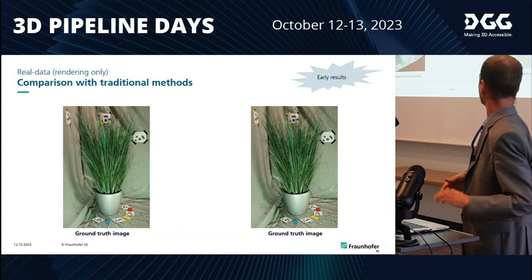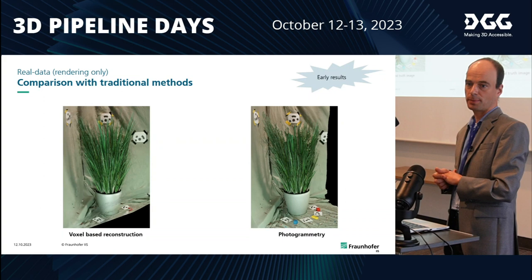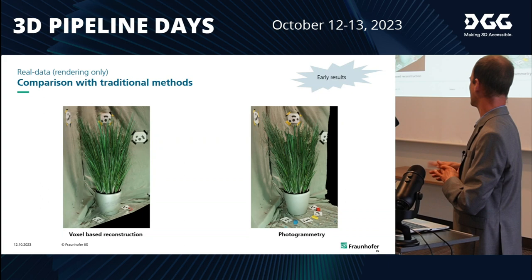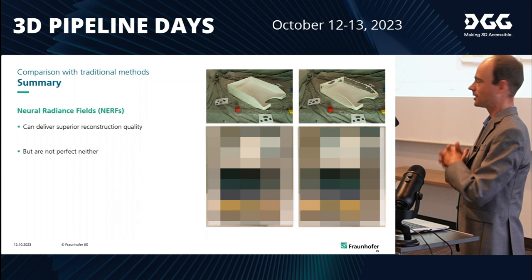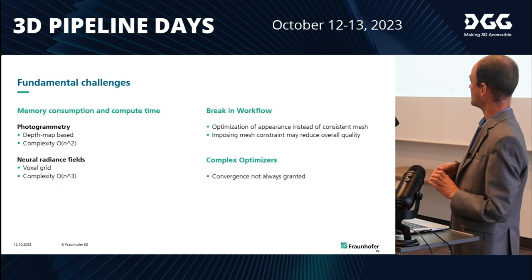Here is another example with very fine-grained details, which is also very difficult for photogrammetry and mesh-based approaches. You can see it's not perfect in neural radiance fields either, but it's much better — so it's going in the right direction. I hope you see that yes, it's looking promising and the photo quality is good, but it wasn't perfect either.